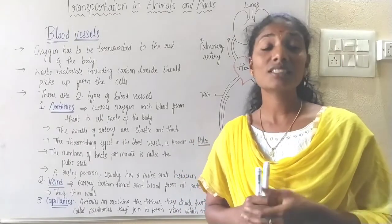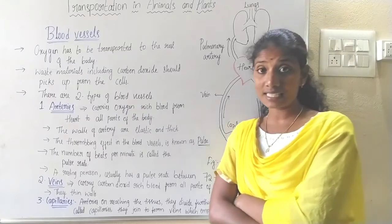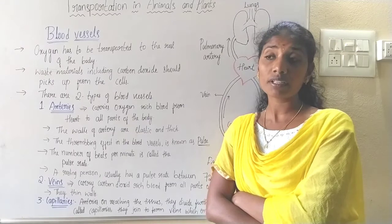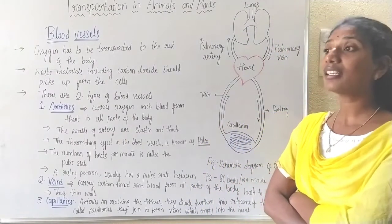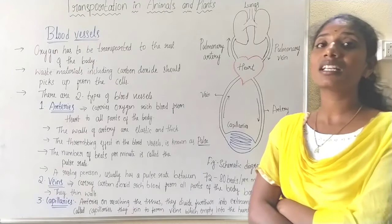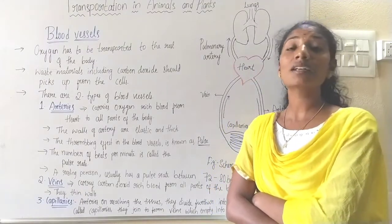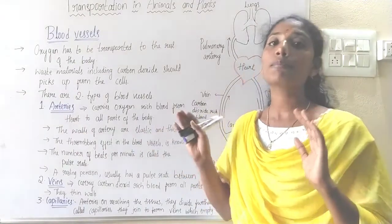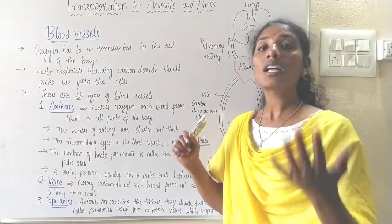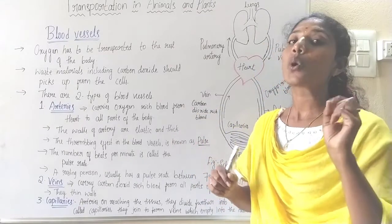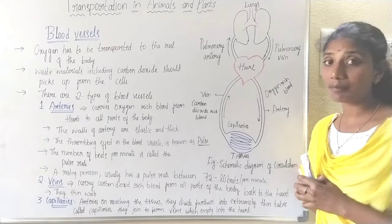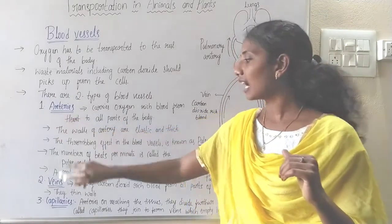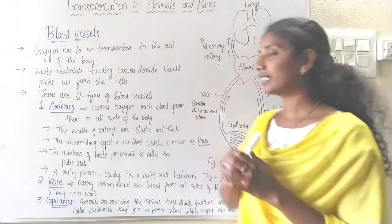Not only that - as a result of respiration, carbon dioxide is released in our body. We know that carbon dioxide is toxic to our body, so it is very important to eliminate it. This means carbon dioxide also should be picked up from the cells. For this transportation, there are different types of blood vessels present in our body. There are two types of blood vessels: arteries and veins.